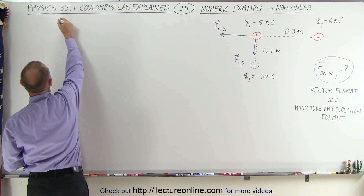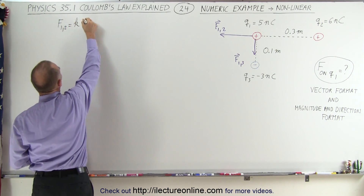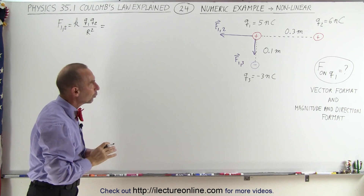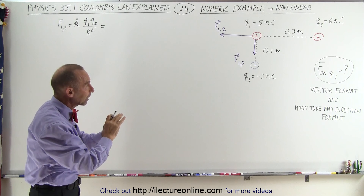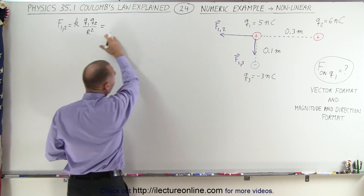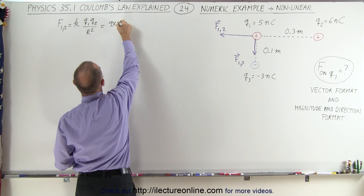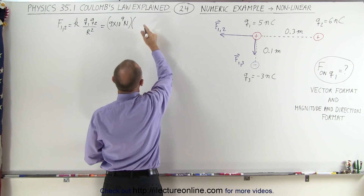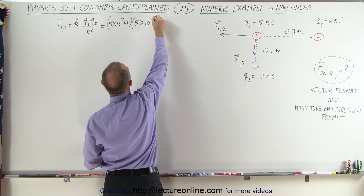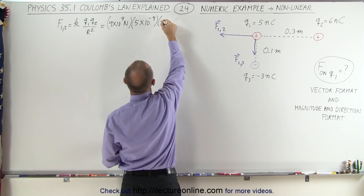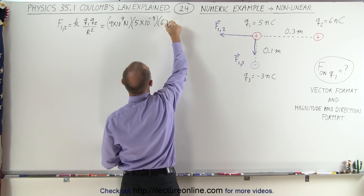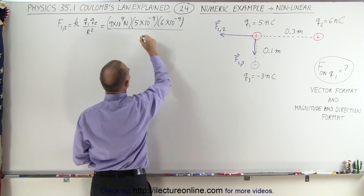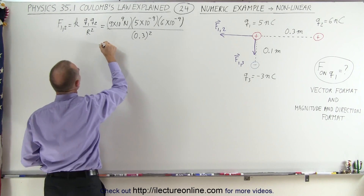First, let's find the magnitude of F1,2. That's equal to K times Q1 times Q2 divided by the distance between them squared. Even though there may be positive and negative charges, since we're finding the magnitude of the force, we don't care about the negative signs or direction. So this would be 9 times 10 to the 9th, times Q1 which is 5 nanocoulombs (5 times 10 to the minus 9 coulombs), times Q2 which is 6 nanocoulombs (6 times 10 to the minus 9 coulombs), divided by 0.3 meters squared.